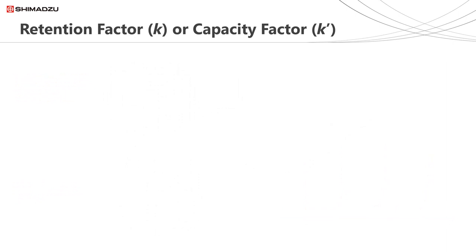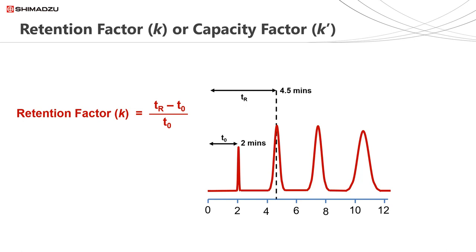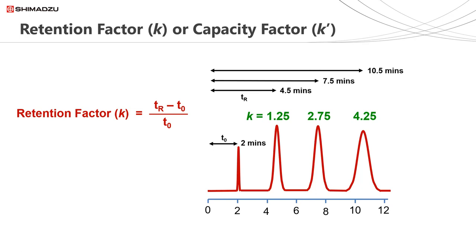The retention factor K, or capacity factor K', for a given analyte will be determined by its relative affinity for the stationary phase and mobile phase. If we look at the example chromatogram, we can calculate the retention factor of each peak using this equation. We need to know the time at which the unretained analyte elutes and the time at which our analyte of interest elutes — this then gives us our retention factor K. Ideally the retention factor value for each peak of interest in our chromatogram should be greater than 2, but less than 10.